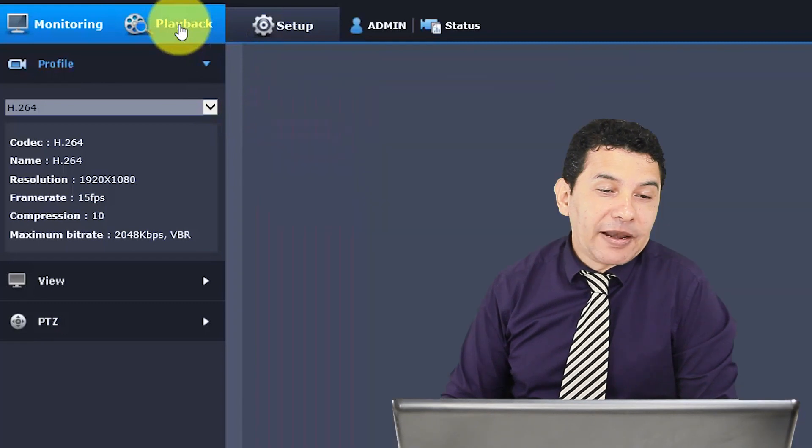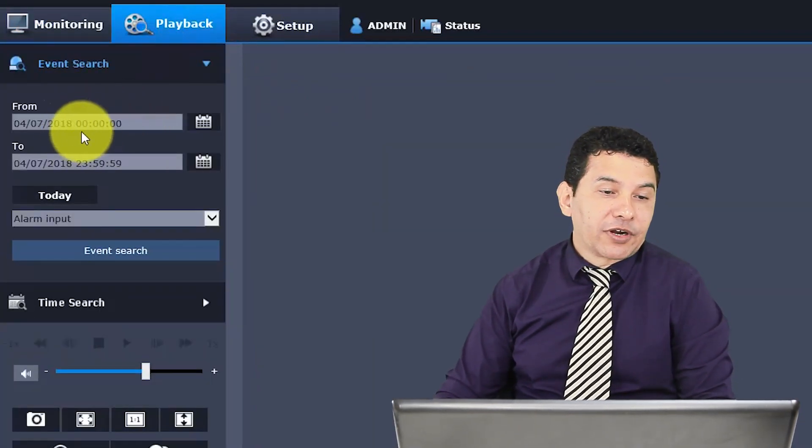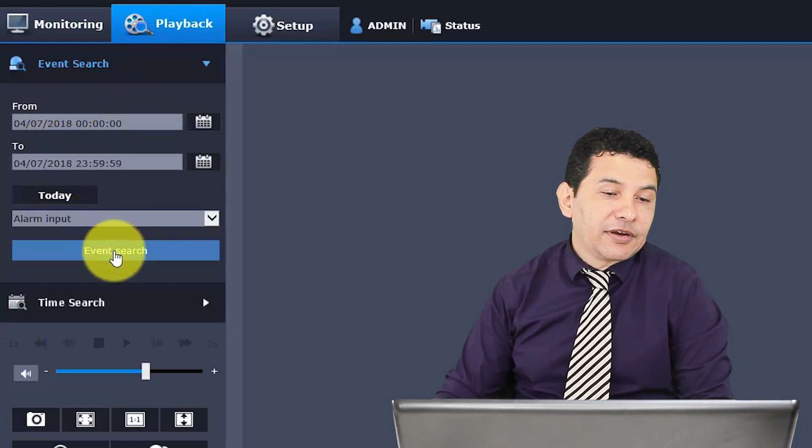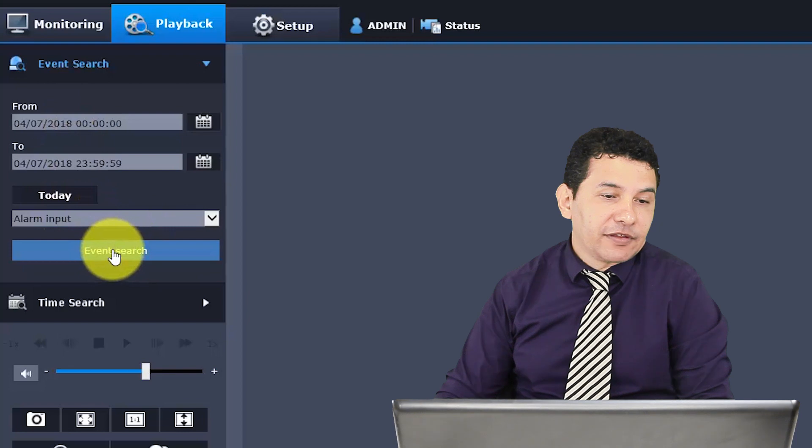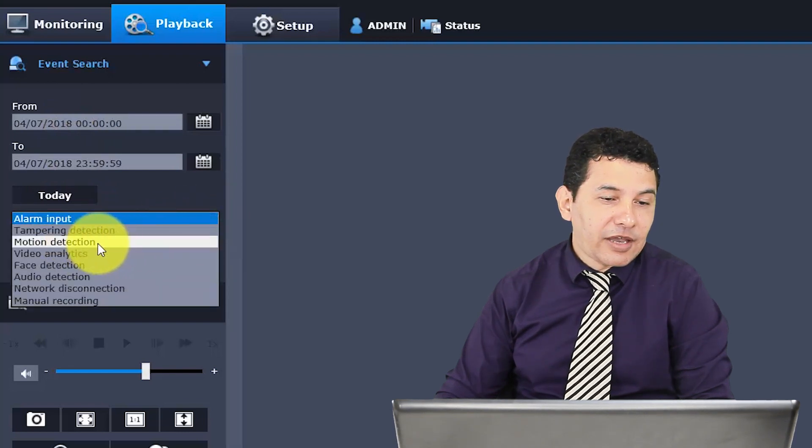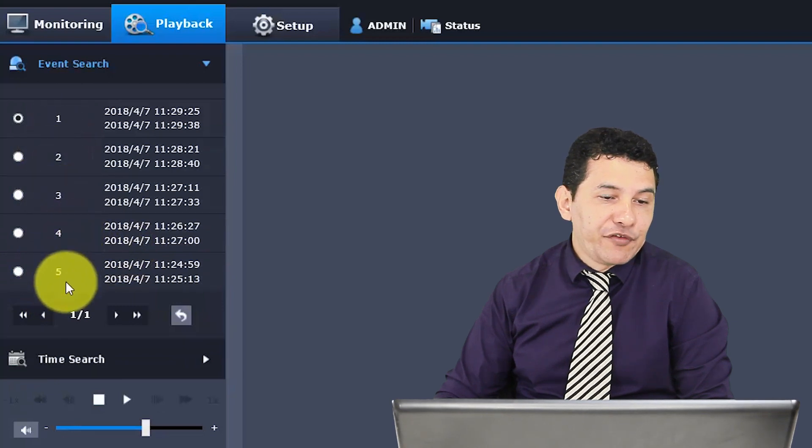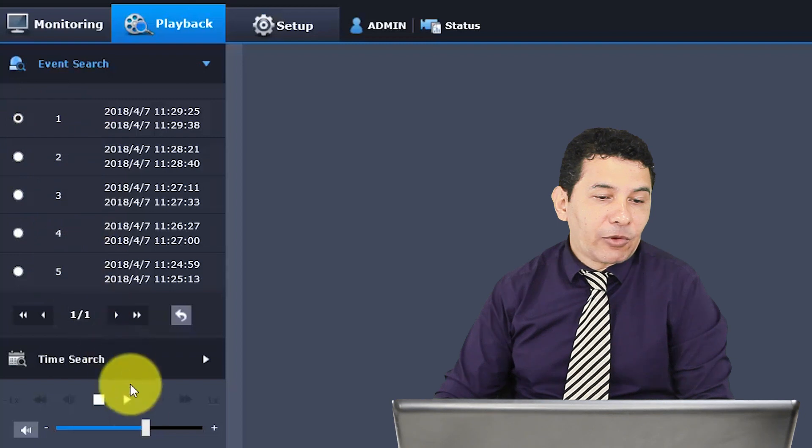So if I come here to Playback, then I can see what's recorded in the card from date and time, or I can come here by Event and search by Event. So let me search here for Motion Detection. I'm going to use Motion Detection and Event Search. Then I can see everything that's recorded here. I have five events recorded. The last one is just right here. I'm going to play it.